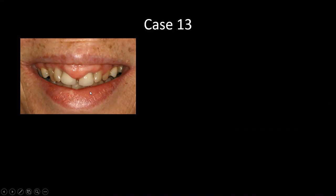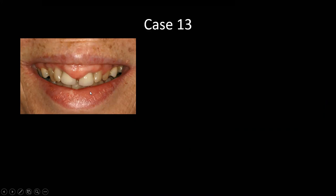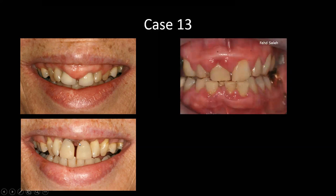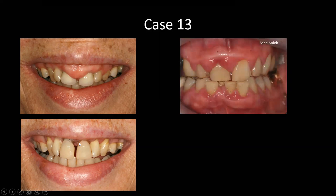Drug-related gingival overgrowth is becoming increasingly common — I think this was amlodipine, a calcium channel blocker. We'll see it a lot more. It was treated with resection and new provisional crowns. You're likely to see this in the anterior sextants in close conjunction with areas of plaque retention. Another case was managed by simply changing the calcium channel blocker to another anti-hypertensive with good non-surgical debridement by a hygienist — the results are impressive.